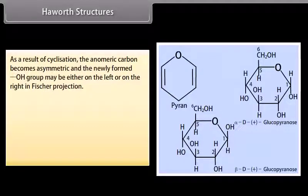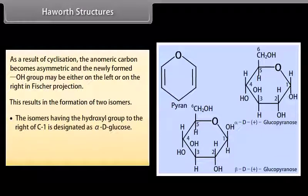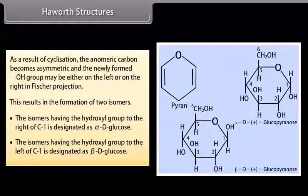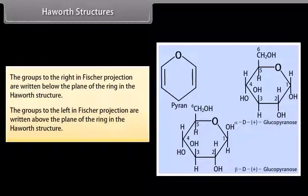In Haworth structures, as a result of cyclization, the anomeric carbon becomes asymmetric and the newly formed OH group may be either on the left or right in Fischer projection, resulting in two isomers. The isomer having the hydroxyl group to the right of C1 is designated alpha-D-glucose, and to the left is beta-D-glucose. The lower thickened edge of the ring in Haworth structure is nearest to the observer. Groups to the right in Fischer projection are written below the plane of the ring, and groups to the left are written above.